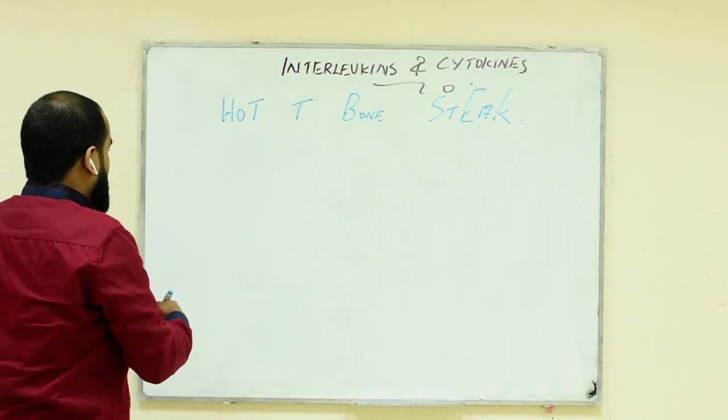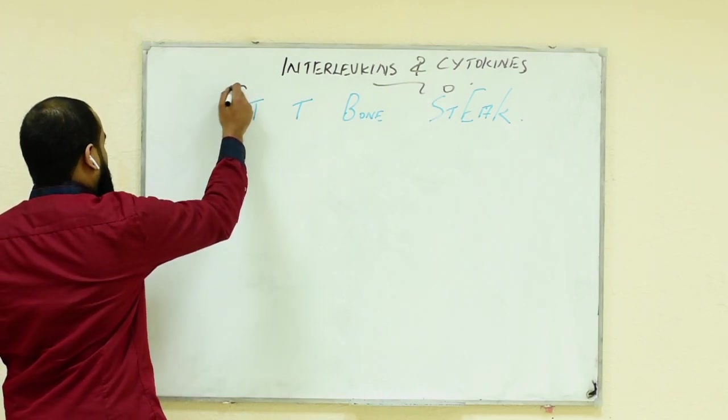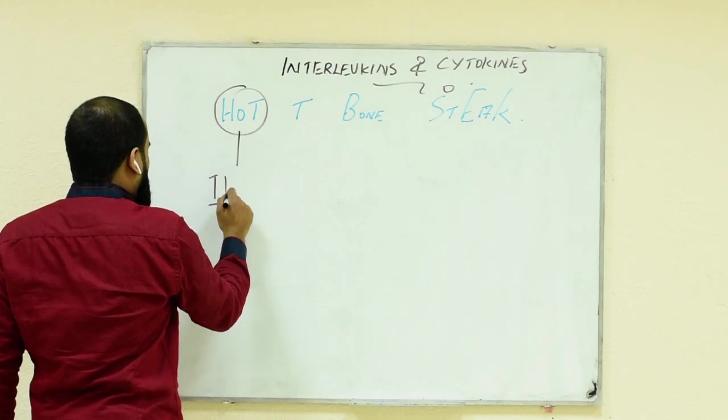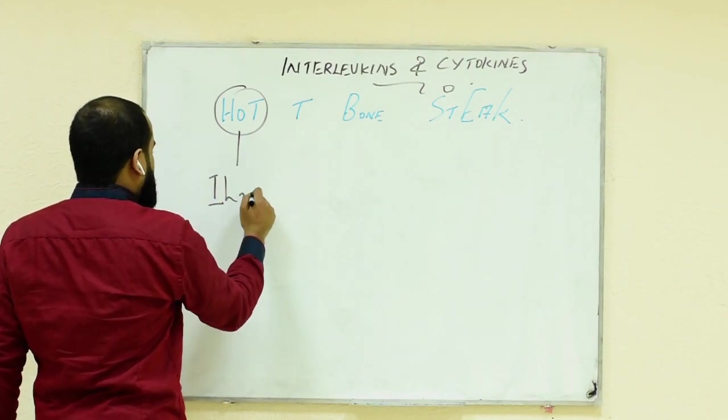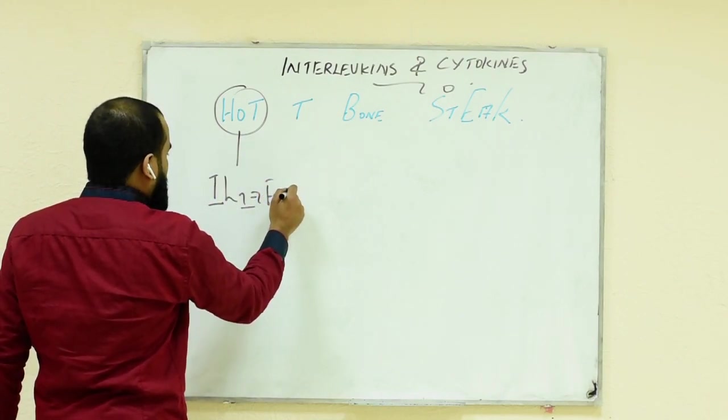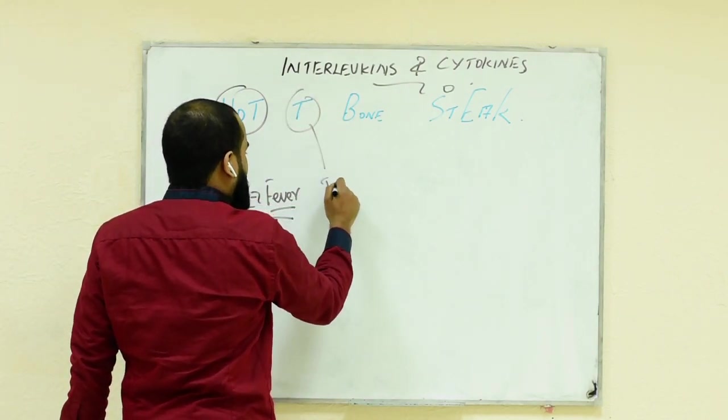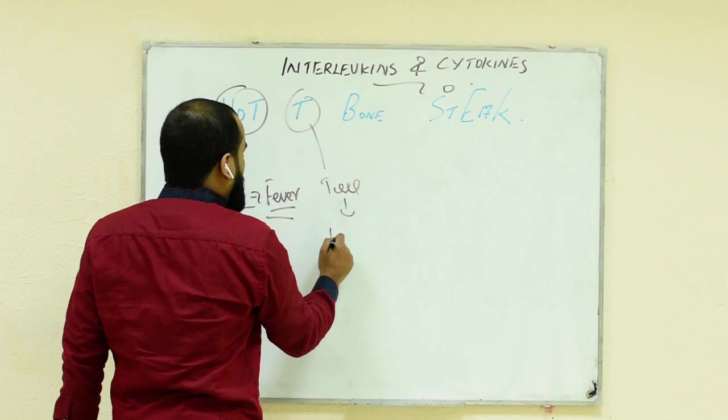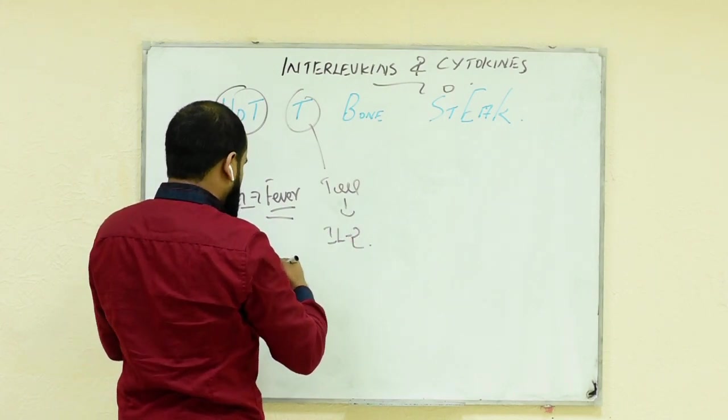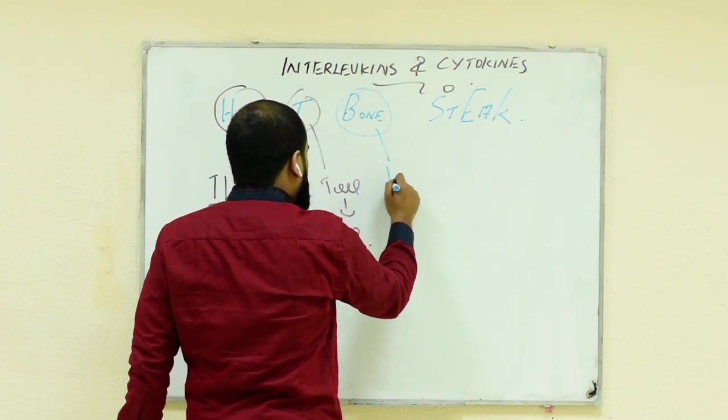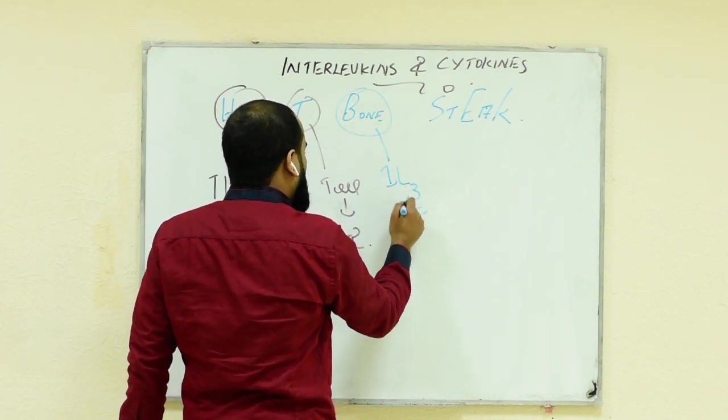Here HOT is for interleukin 1, which means interleukin 1 is responsible for fever. T for T cell by interleukin 2. Bone itself is controlled by the progenitor, interleukin 3.